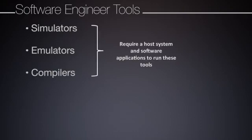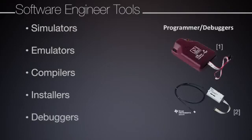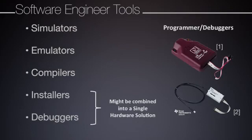Third, compilers — software that allows developers to create executable code for their intended architecture. Fourth, installers — a software-hardware combination that allows compiled executable programs to be installed onto a platform. And fifth, debuggers — a hardware-software solution that allows programmers to test and validate their executable programs.